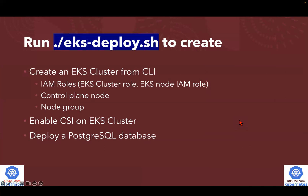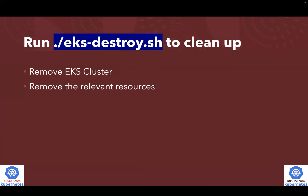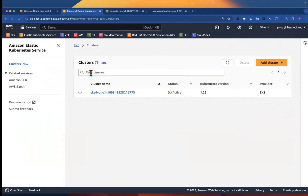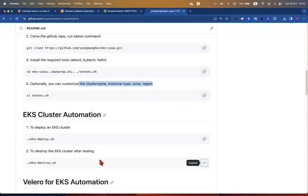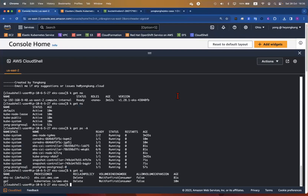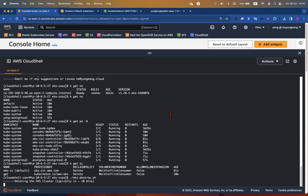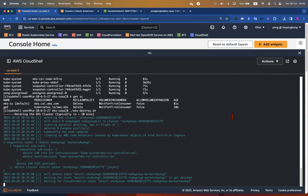Just coming back to the slide: it only takes 15 minutes to automate all of these tasks. If you follow the official AWS documentation, it would take a lot more than 15 minutes. So what about next? Once you've done all the testing, if you don't want to keep being charged by AWS, there is another magic command — EKS-destroy — which will clean up the whole environment. All you need to do is run that one command and in about 10 minutes the whole environment will be cleaned up.